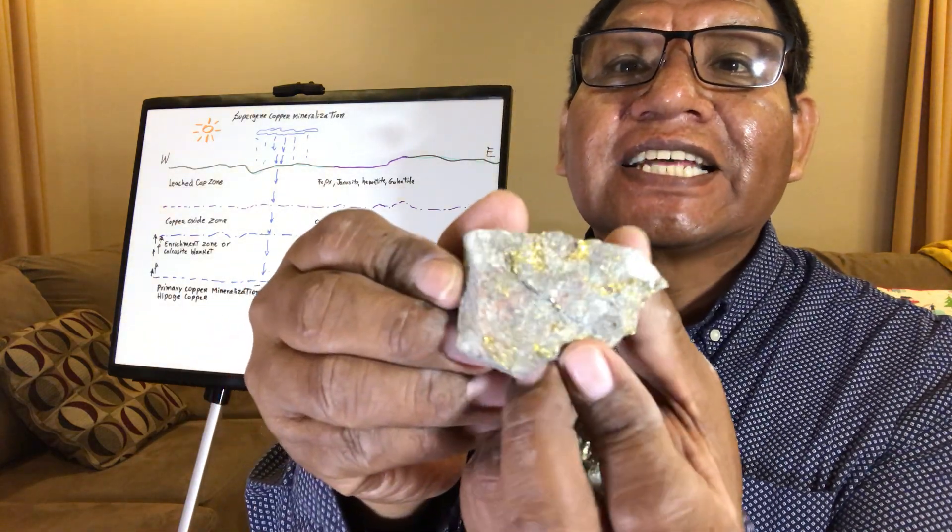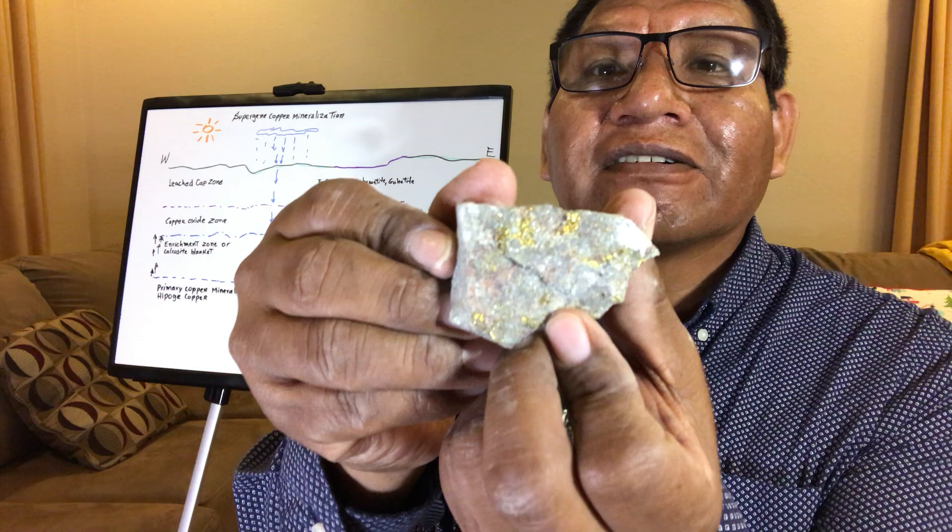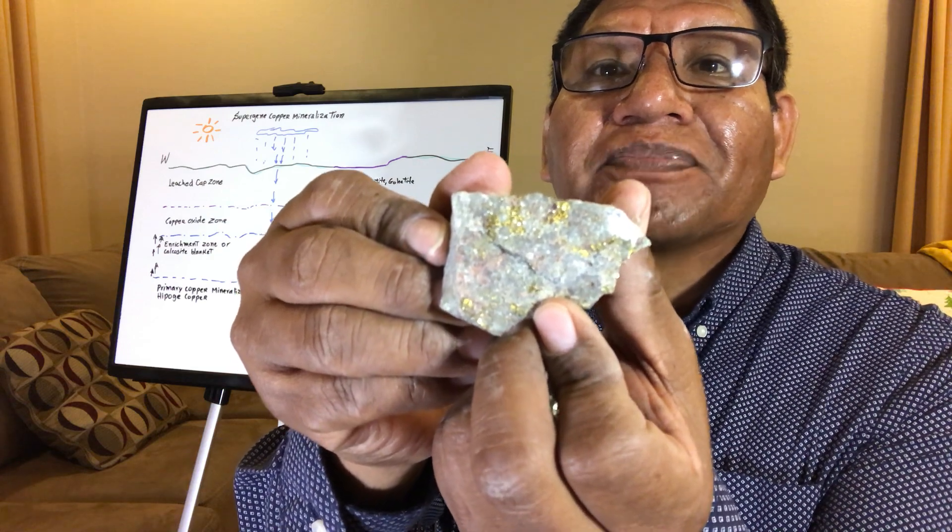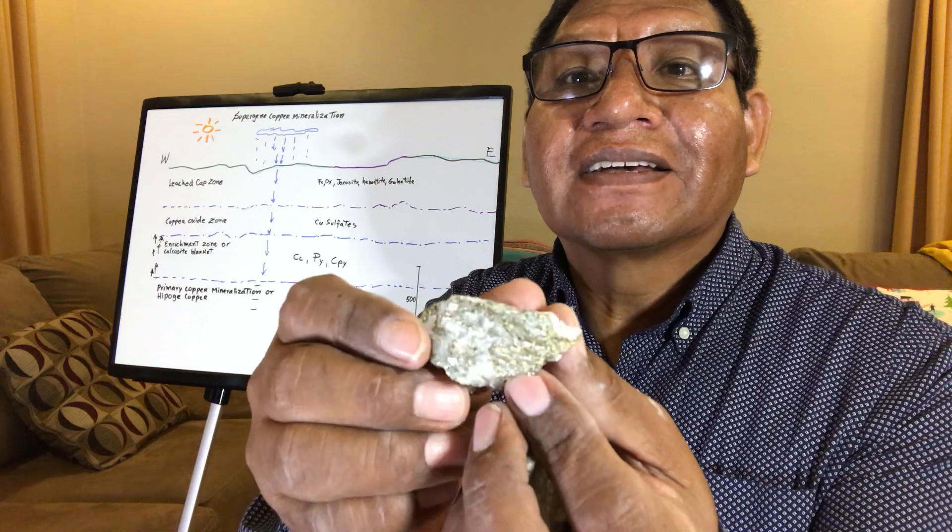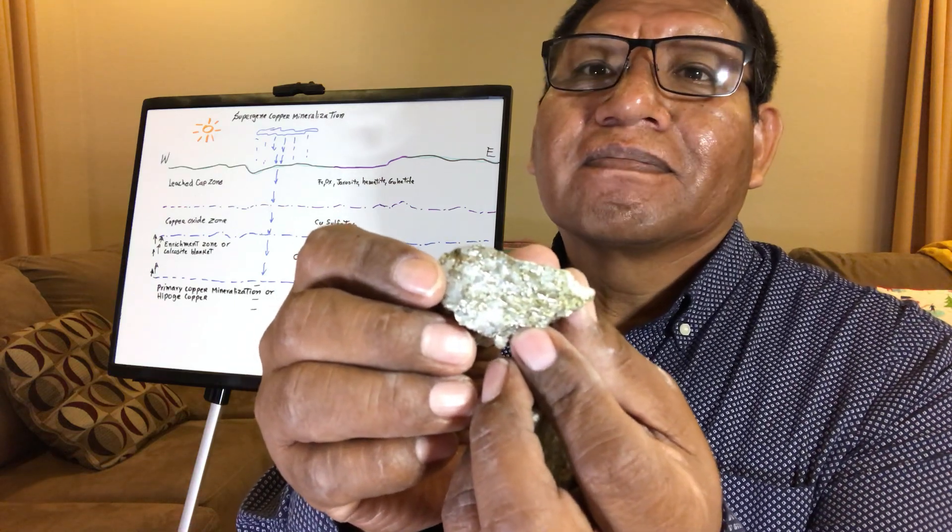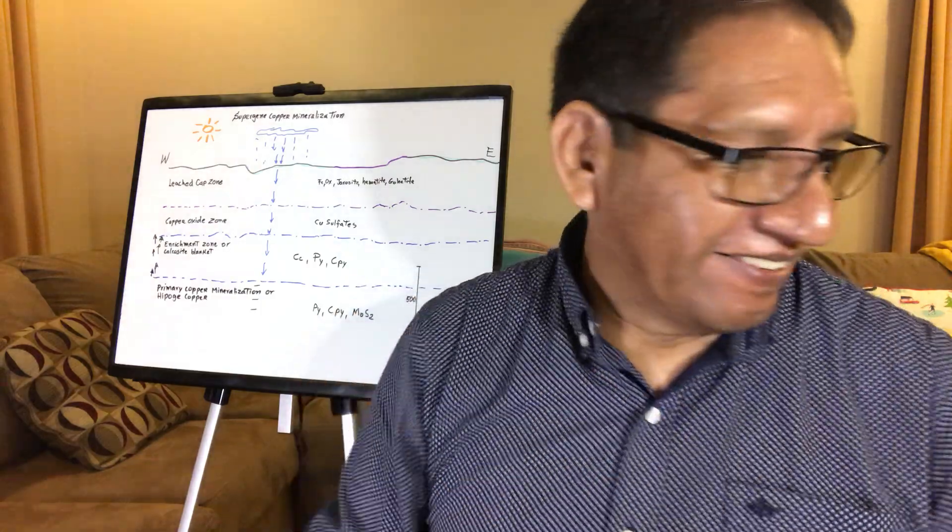So for the primary mineralization it's like this, everything yellow, chalcopyrite, copper iron sulfide, and iron sulfide.